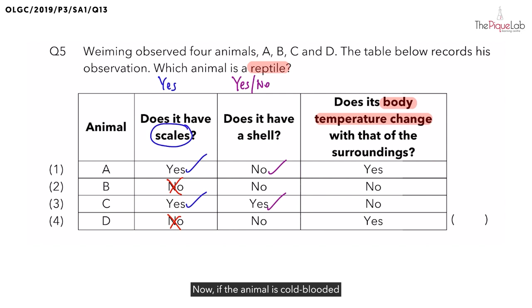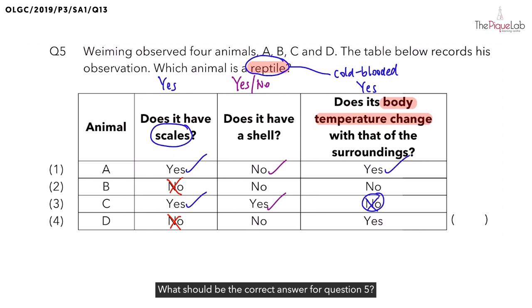Now what's the opposite of warm-blooded? That will be cold-blooded. Now if the animal is cold-blooded, if they move from a hot habitat to a cold habitat, this time will their body temperature change? Answer is yes. So if we take a look at the reptile, reptiles are they warm-blooded or cold-blooded? They are cold-blooded. And because they are cold-blooded, do you think their body temperature will change with that of the surroundings? Answer is yes. Which means is option one possible? Yes. What about number three? No, because they answered no. So with that we can get our final answer. What should be the correct answer for question five? The answer should be number one.